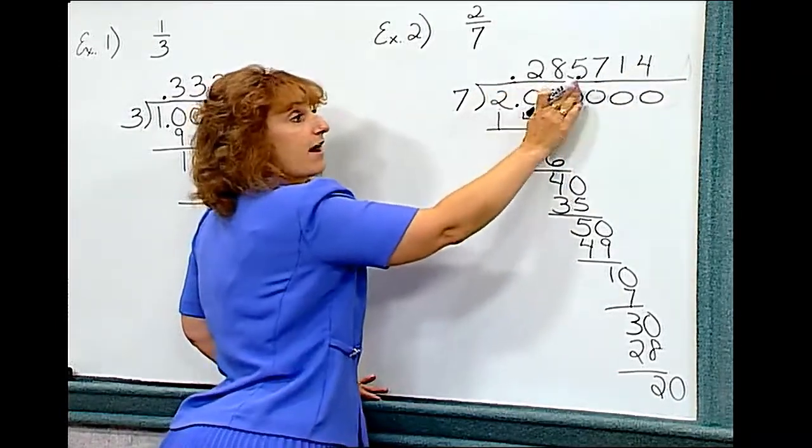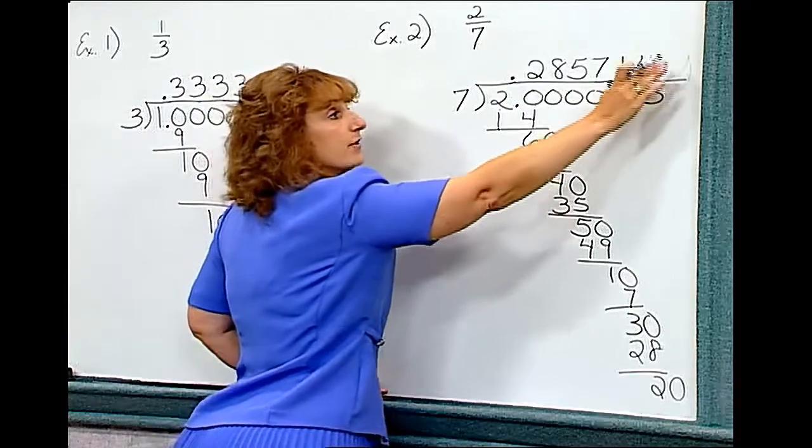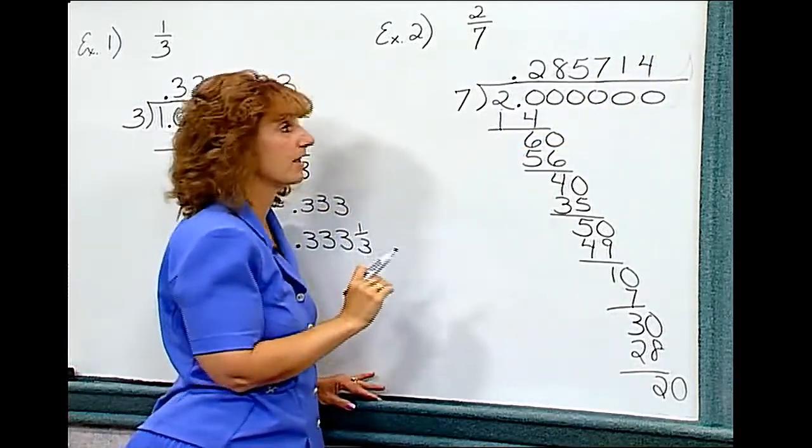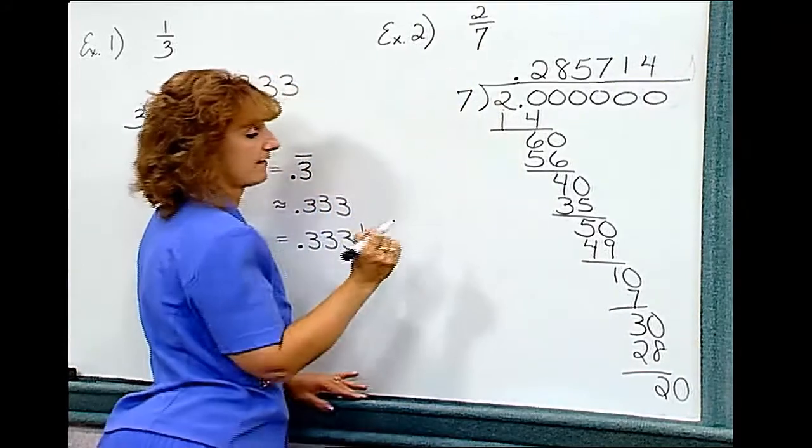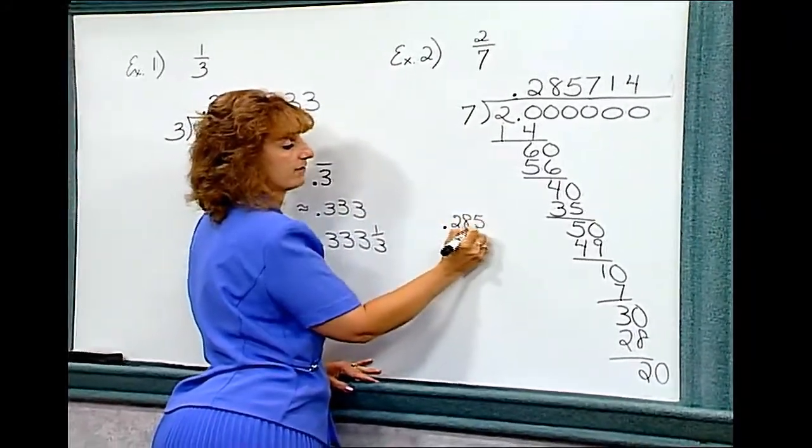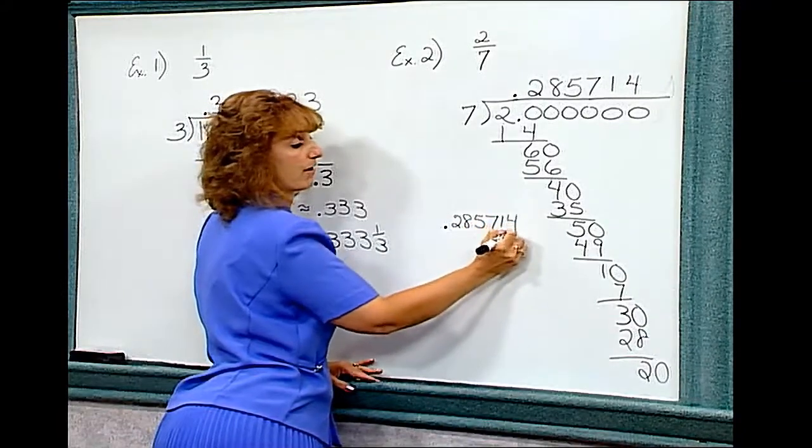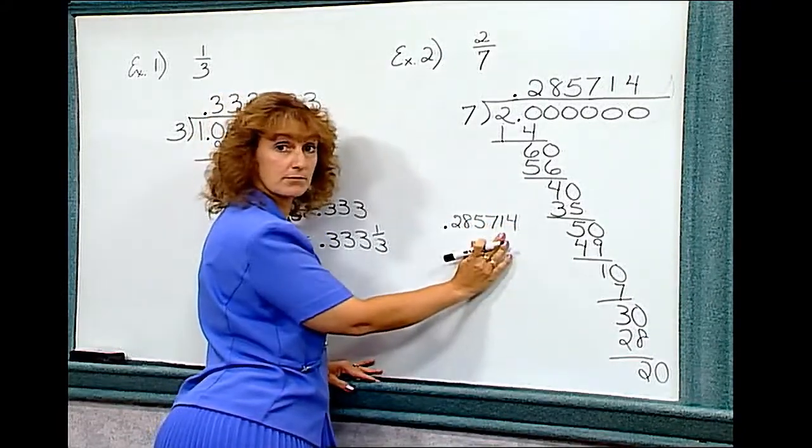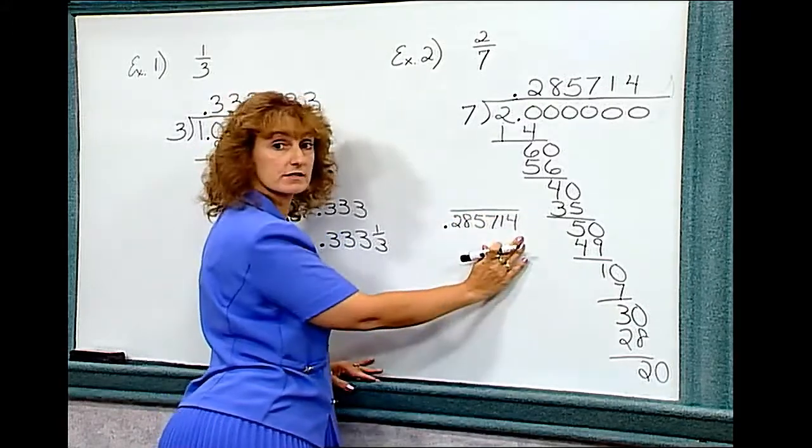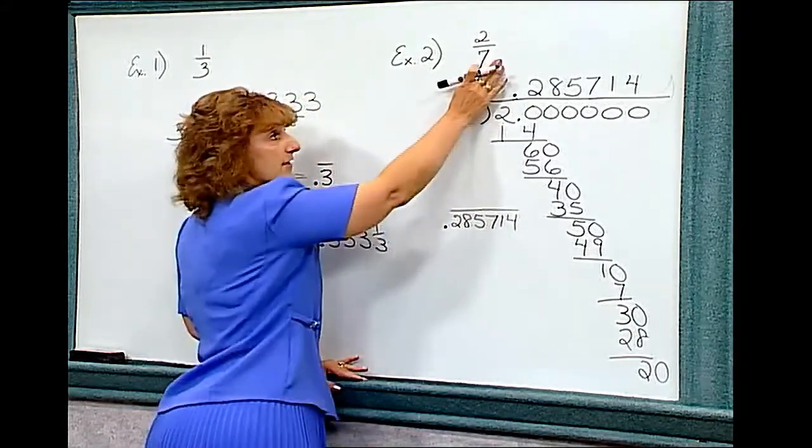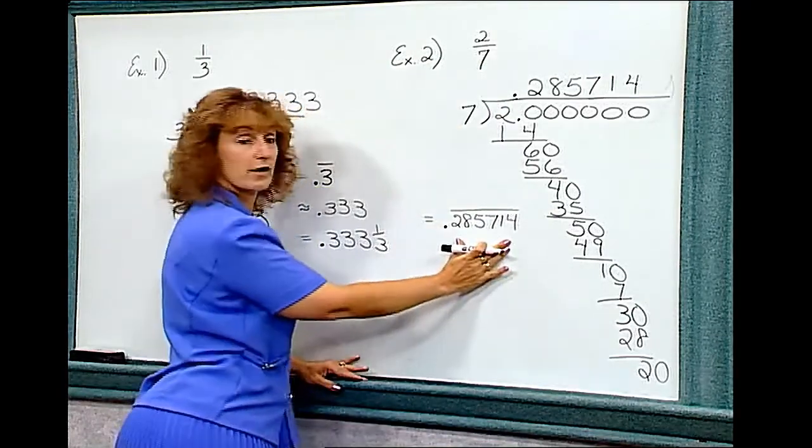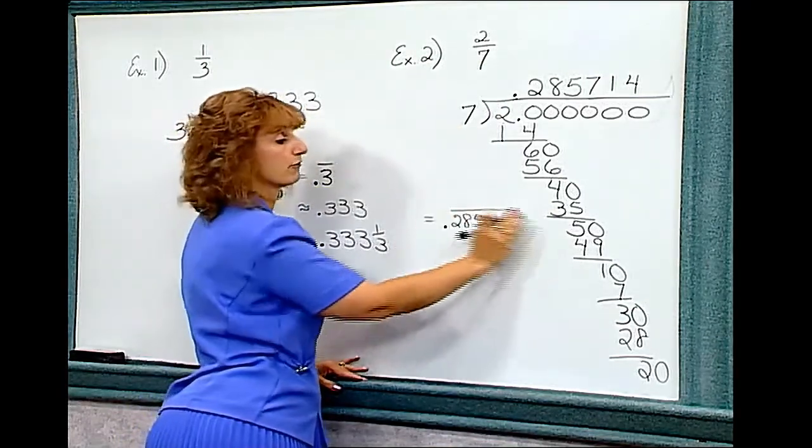Point two eight five seven one four, two eight five seven one four—that will never stop. So I can write two-sevenths as point two eight five seven one four. And since all six numbers would repeat, I would put the repeating bar over all six numbers. Two-sevenths is equal to point two eight five seven one four repeating.